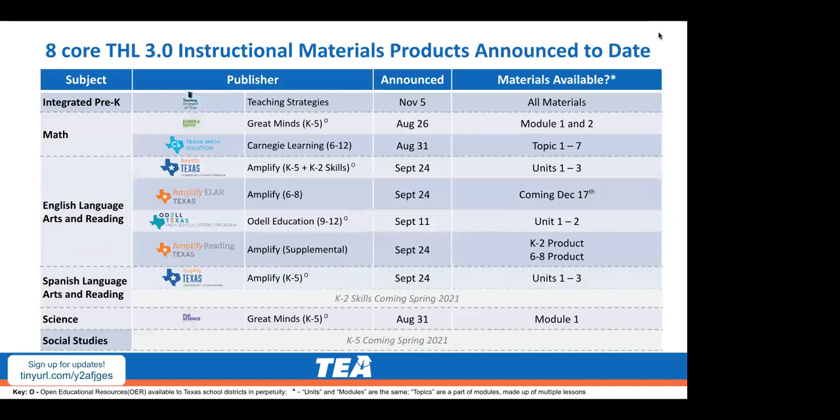To date, eight core THL products have been announced. You can see what materials are available for each grade level and subject. Today we're actually going to be talking about one of our supplemental products, which is Amplify Reading Texas, specifically for grades 6 through 8.